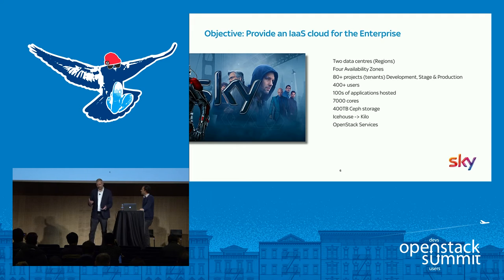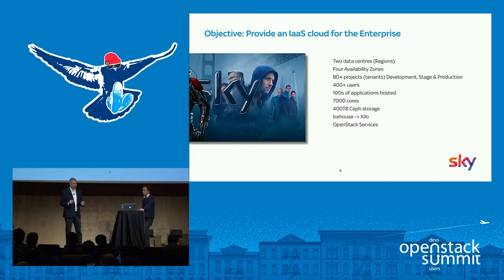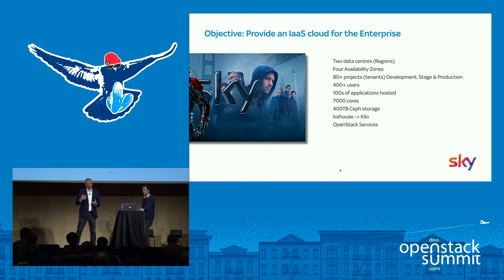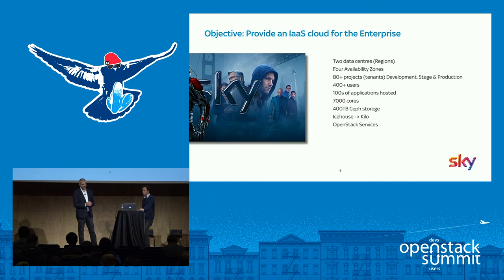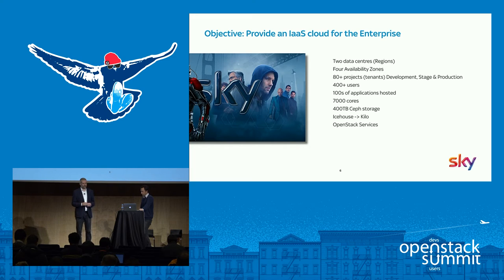In our data centers we've delivered two primary OpenStack regions with multi-availability zones in each region. There are around 80-plus tenants with around 400 users creating instances, networks, load balancers, ports, and storage — all self-service. They create their infrastructure themselves and deploy their applications on top, using Heat and Ansible quite extensively. From a data center footprint perspective, we have something like 7,000 cores and 400 terabytes of storage.